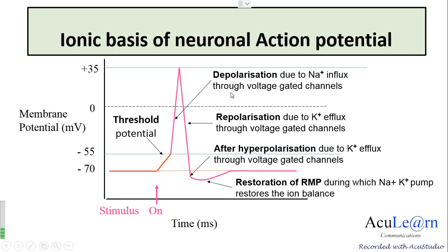There are two distinct phases of the action potential: depolarization and repolarization. The threshold potential is the membrane potential at which an action potential is initiated, reached when a threshold stimulus is applied. The stimulus increases permeability of the membrane to sodium, changing the potential from minus 70 to minus 55 millivolts. At minus 55 millivolts, voltage-gated sodium channels open causing sodium influx and the depolarization phase, with the membrane potential rising to plus 30 to plus 35 millivolts, at which point the voltage-gated sodium channels close and voltage-gated potassium channels open, initiating repolarization.